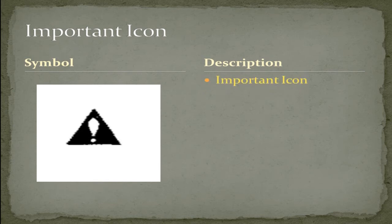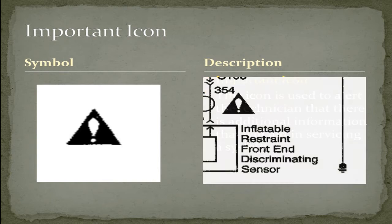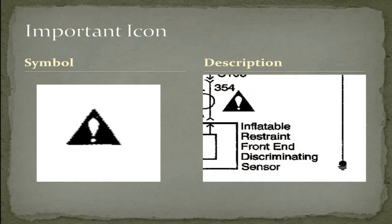The important icon. This icon is used to alert the technician that there is additional information that will aid in servicing a system. As illustrated here in a snapshot of the SIR system, you can see the important icon.